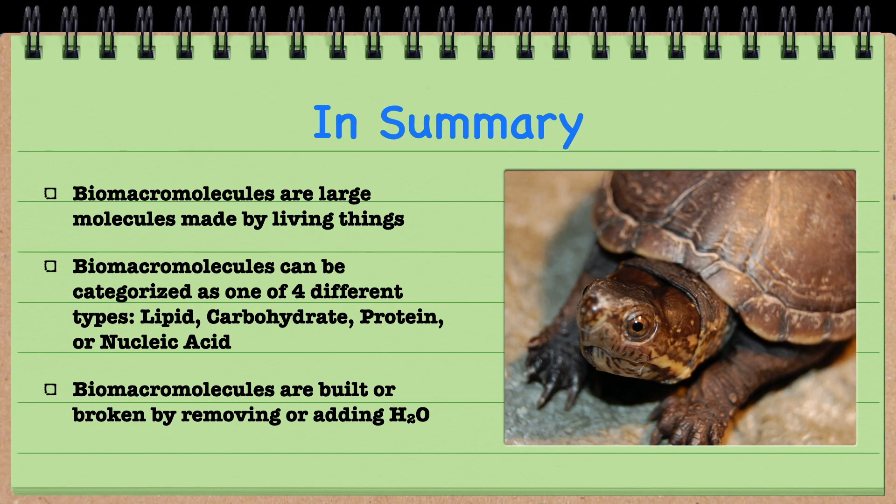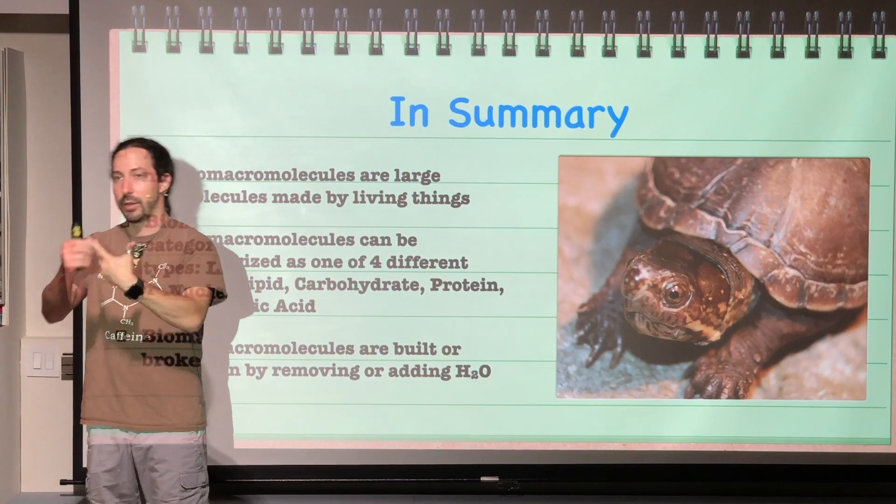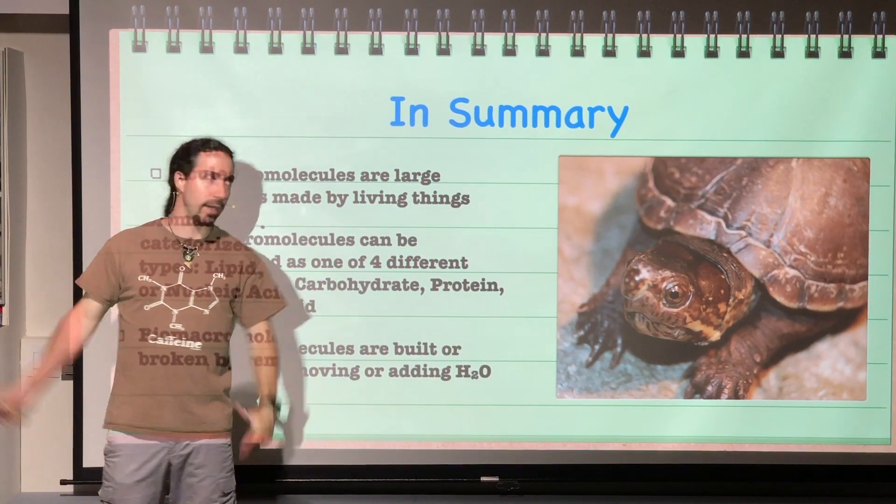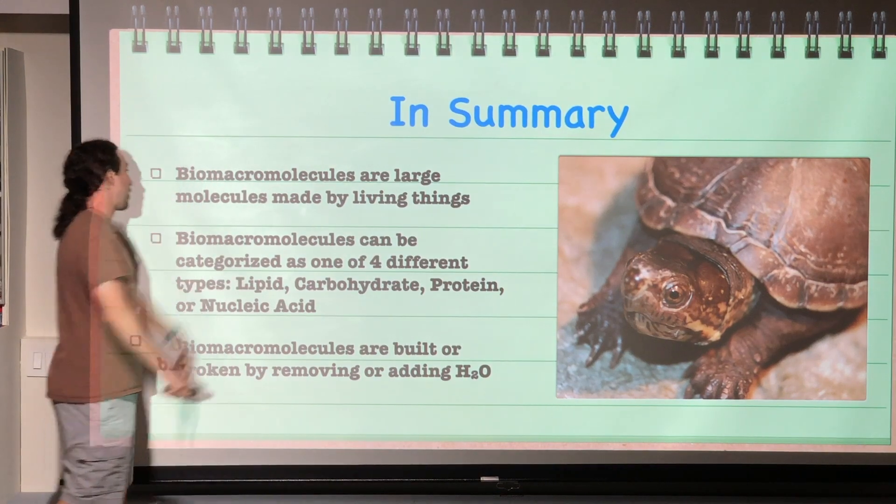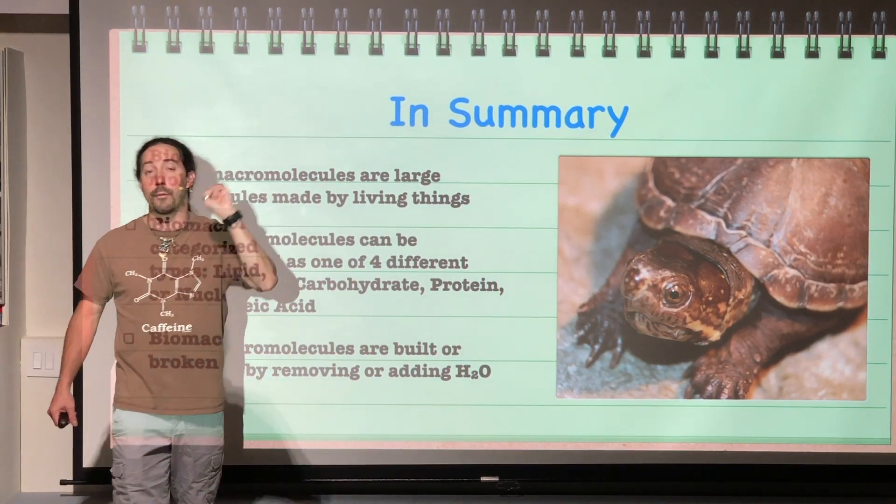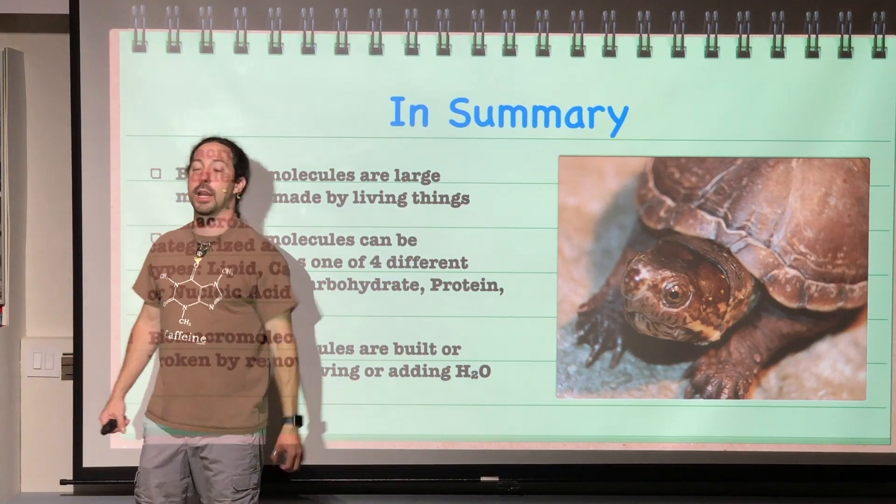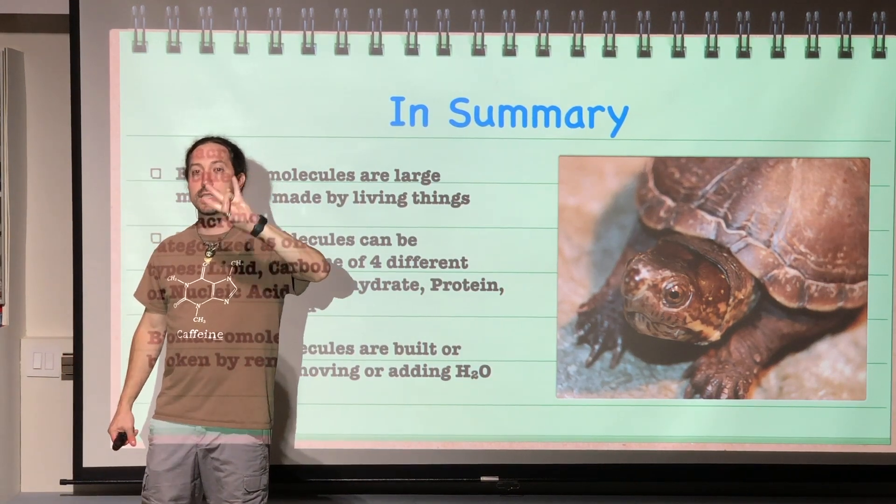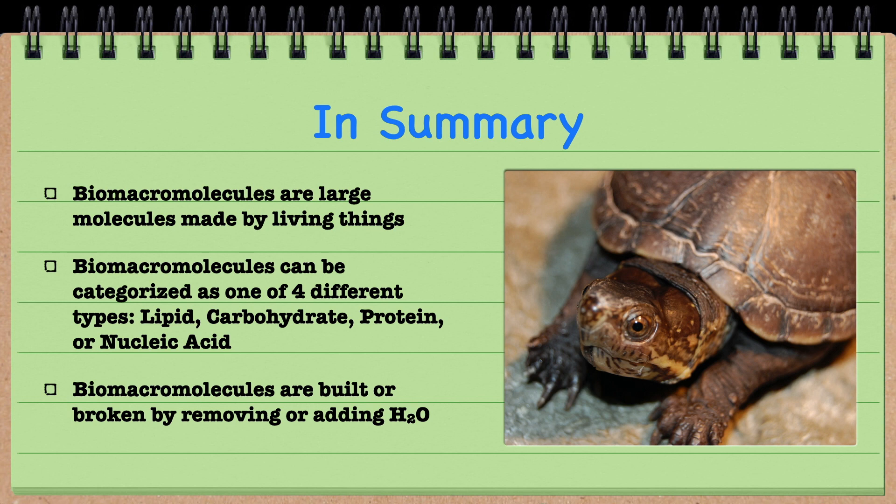So in summary of all that, biomacromolecules, they're large molecules made by living things. That's bio, macro, molecule. Bio is life. Macro is large. Molecule, it's a molecule. Next, biomacromolecules, there's four different types: lipids, carbohydrates, proteins, nucleic acids. And lastly, they are always built or broken by removing or adding H2O every single time.